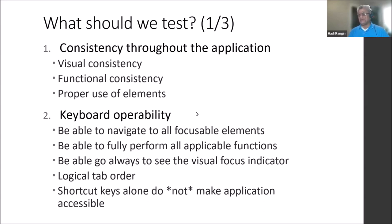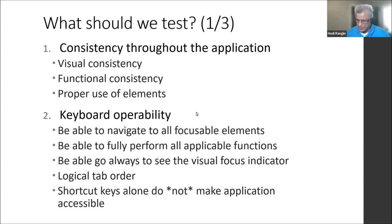Proper use of elements is important. For many developers, links and buttons are the same, but they are not. A button should trigger a function; a link should take you to a different page. By mixing them up, you confuse users' expectations. When I click on a link, I expect to be redirected to a different page — but if nothing happens because the link just triggers a function on the same page, I am confused. This is very easy to get wrong.